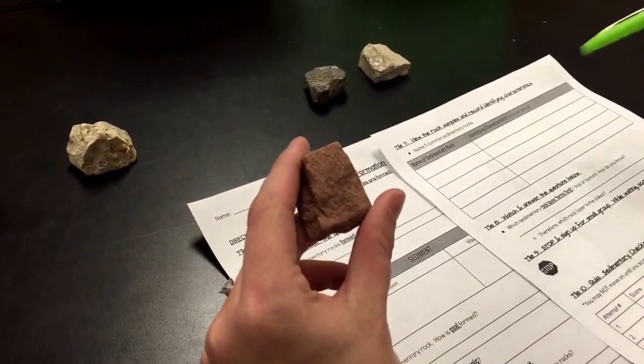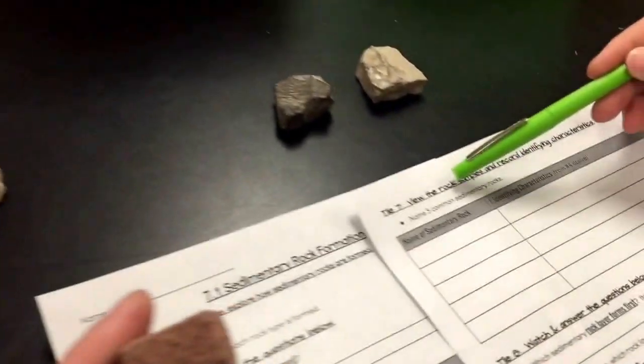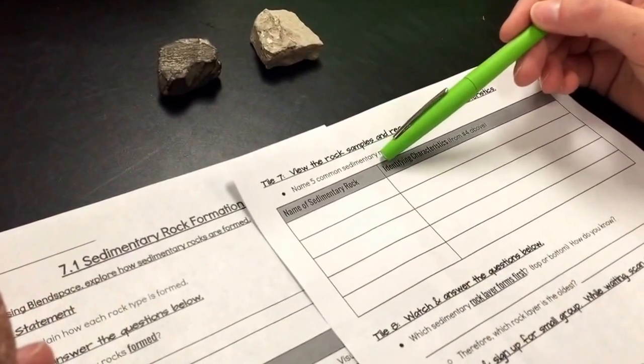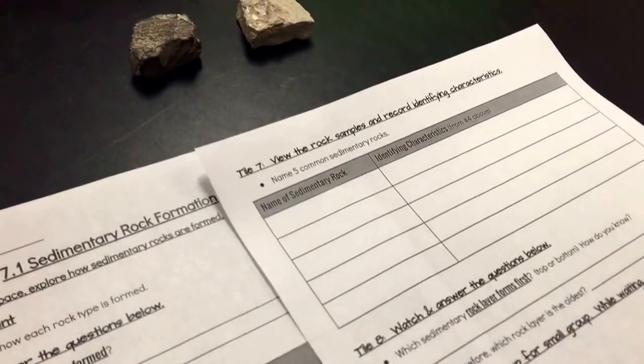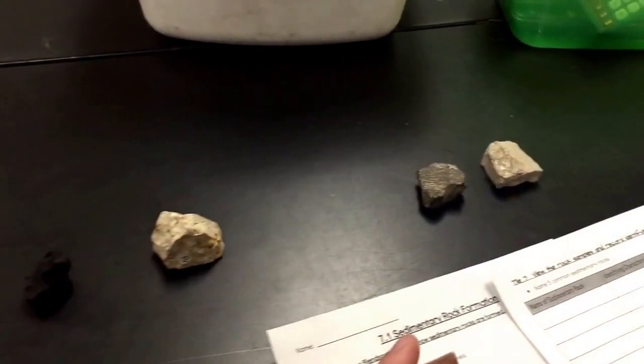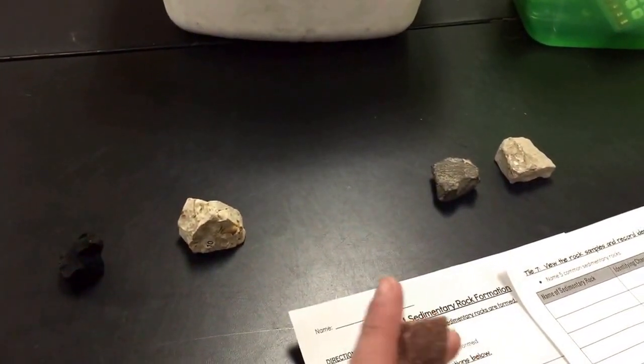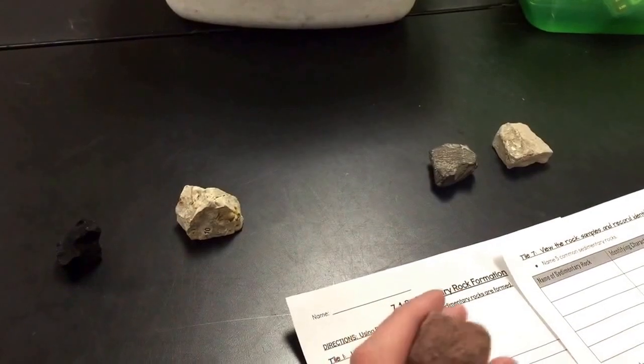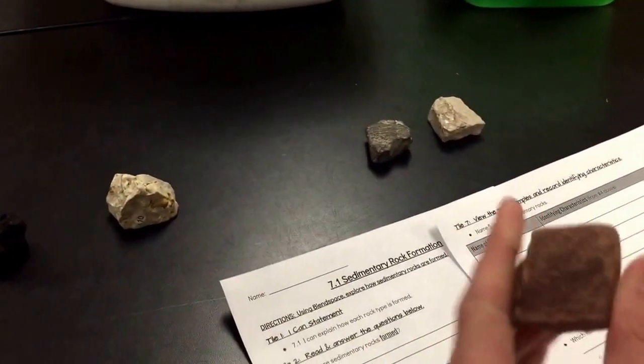Okay, so when you are going to do Tile 7 and you're looking at five common sedimentary rocks, you're going to go to the counter and you're going to see rocks that have their names next to them. What you're going to do is you're going to write the name of that rock down. So for example, this rock I just picked up is called sandstone.